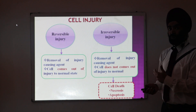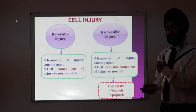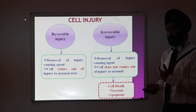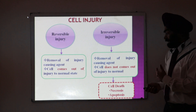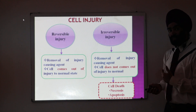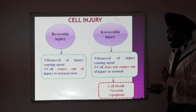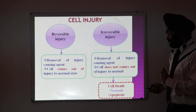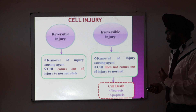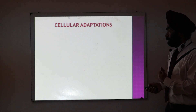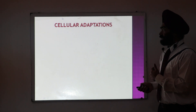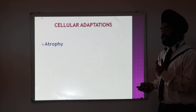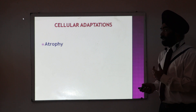So that is irreversible cell injury, and obviously if there is irreversible cell injury, the cell is going to die. There are two mechanisms of cell death that we will discuss in forthcoming lectures — one is called necrosis and the second is called apoptosis.